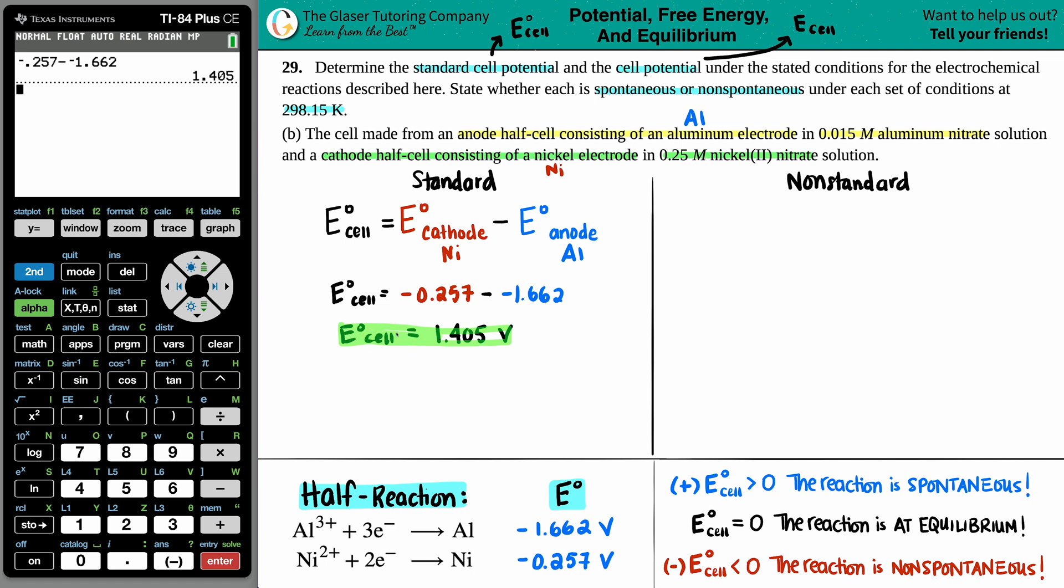Okay. Now let's just quickly answer the second part of the question. We need to just state whether each is spontaneous or non-spontaneous. And that just comes from knowing the sign. If you have a positive E cell value, that reaction is always going to be spontaneous. But if you have a negative E cell value, that is going to be non-spontaneous. So since we clearly have a positive value here, I know that this is going to be spontaneous. So let's just put that. Okay. So first part done.